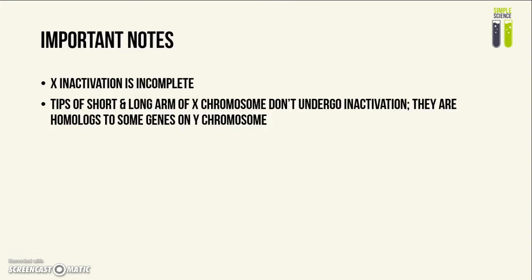An important key note to take into account is that X inactivation is an incomplete process. Even though one X chromosome is inactivated and turns into a Barr body, about 15% of the X chromosome is actually not inactivated — specifically the tips of the short and long arms of those X chromosomes, which just don't undergo inactivation at all.